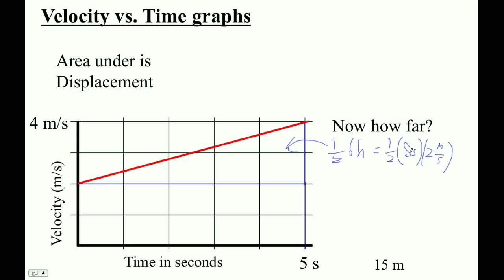And then, the units are just meters because it's seconds times meters per second. The area of this one is just length times width, so five times two. So that's ten meters. And then, here we go, it's 15 meters.